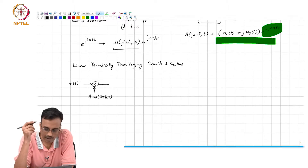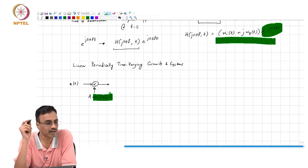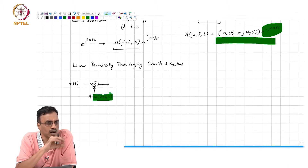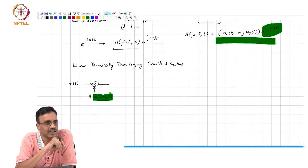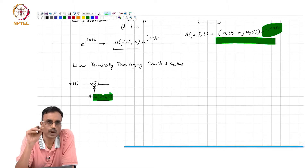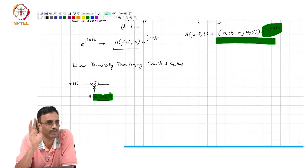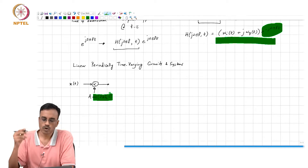If the cos 2 pi f_s times t was not there and it was just simply 1, then x of t is simply experiencing a gain which does not change with time. Now you can think of it as x of t experiencing a gain that is varying with time — and how is it varying? It is not merely varying any old way with time. That variation of the gain is happening periodically.